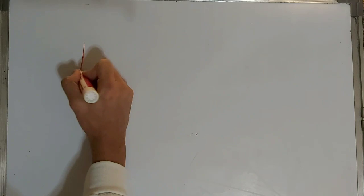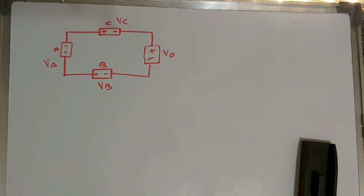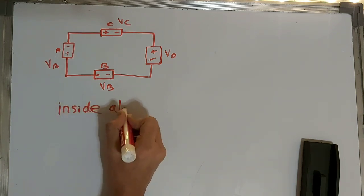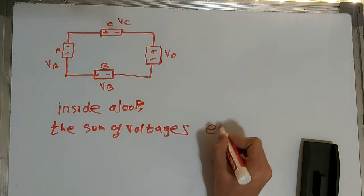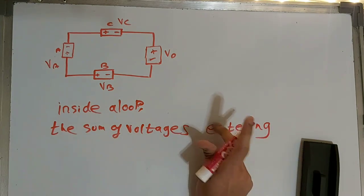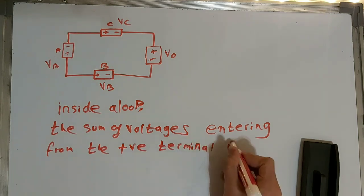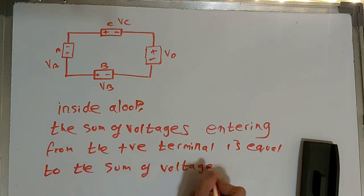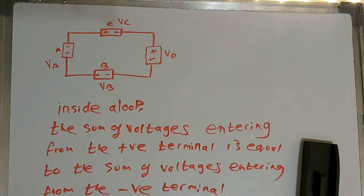Now let's start with KVL — Kirchhoff's voltage law. This is a normal sample circuit. Simply put, inside a loop, the sum of voltages entering from the positive terminal is equal to the sum of voltages entering from the negative terminal.